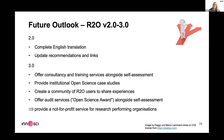In terms of future outlook: the next version will have a complete English translation, hopefully in a couple of weeks, and we need to update recommendations and links since some have been removed from the internet. Future ideas include offering consultancy and training services alongside the self-assessment, providing open science case studies, creating a community of Road to Openness users to share experiences, and potentially developing an audit service — something like an open science award.